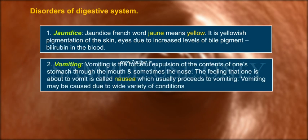2. Vomiting: Vomiting is a forceful expulsion of the contents of one's stomach through the mouth and sometimes the nose. The feeling that one is about to vomit is called nausea, which usually precedes vomiting. Vomiting may be caused due to a wide variety of conditions.